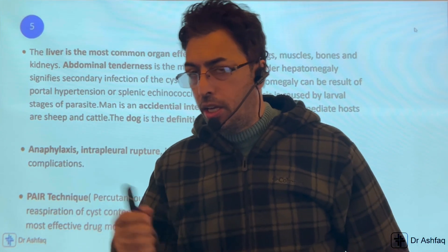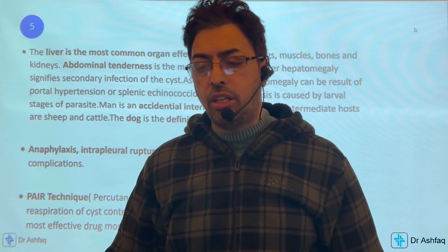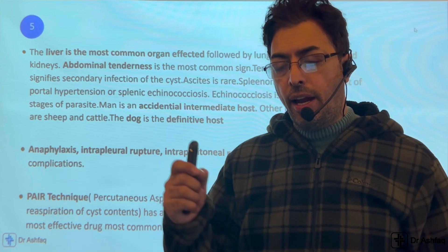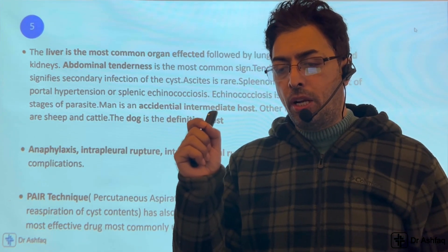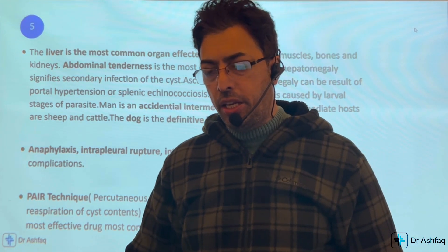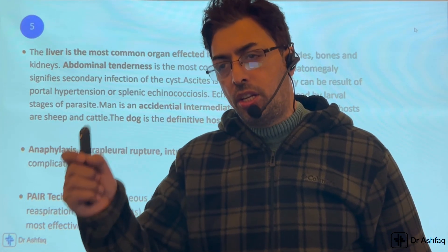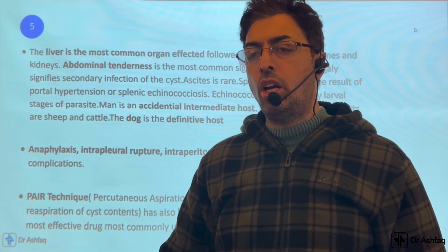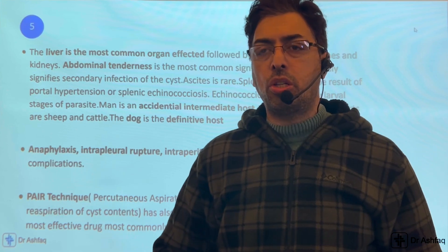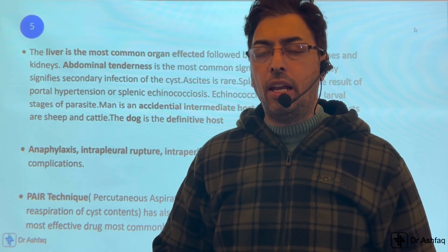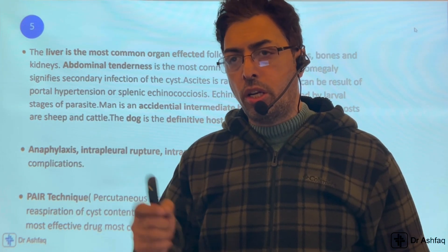The liver is most commonly affected, but any organ — lungs, bone, muscles, kidneys, and even the brain — may be affected in disseminated hydatidosis. Clinically, the patient presents with abdominal tenderness and tenderness in the right hypochondriac area, sometimes indicating secondary infection. It can also be an incidental finding on an ultrasound of the abdomen. Long-standing hydatid cysts can cause splenomegaly as a result of portal hypertension.